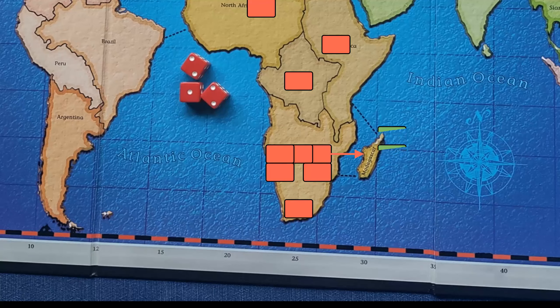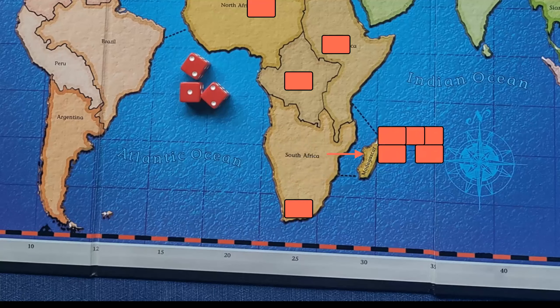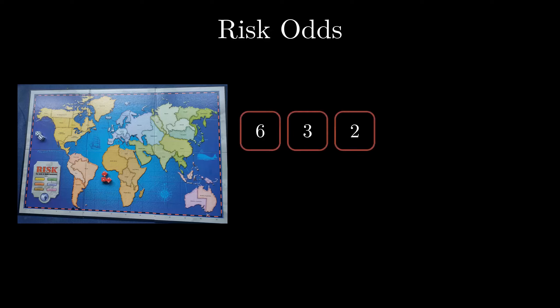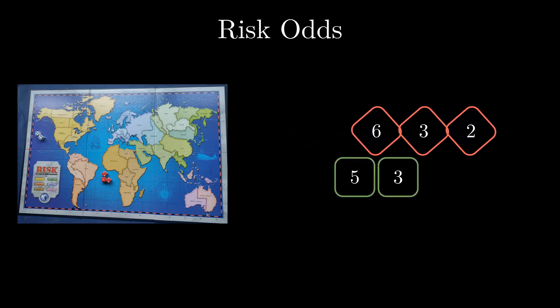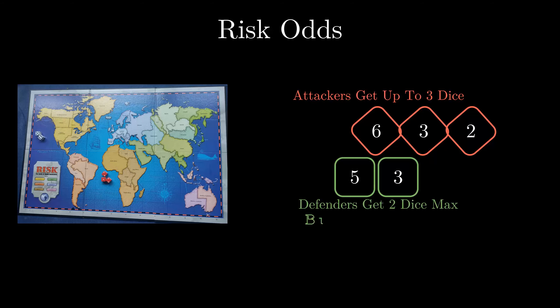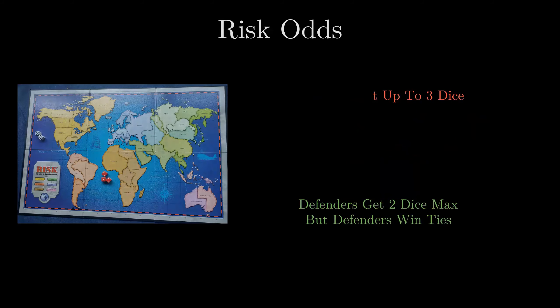You then use those armies to attack other players and take their territories. The way this is done is through rolling dice, which are the traditional six-sided dice. What I find interesting is that the attacking player gets to roll one more die than the defending player, but the defending player wins ties. So which is more advantageous — getting an extra die, or winning ties?